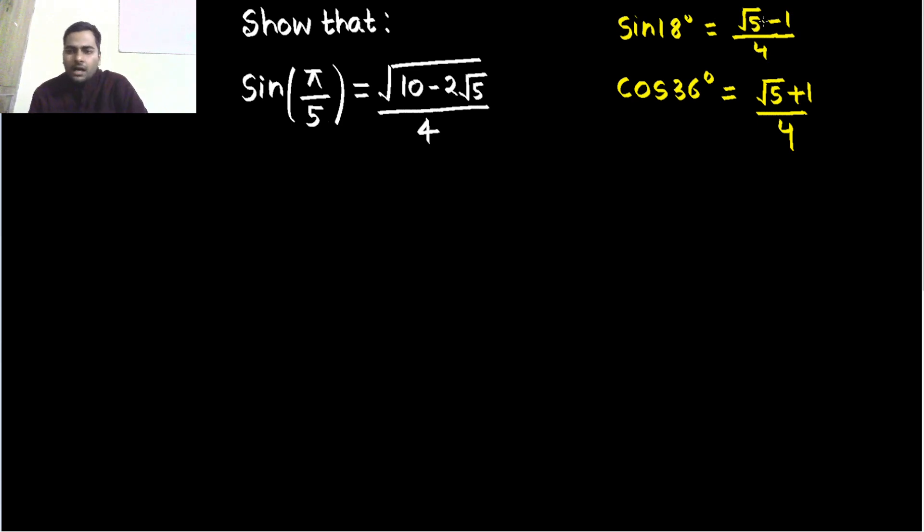I am writing here. So sin 18 value we know, then cos 36 value we know. Now π/5 is nothing but twice of π/10, π/10 is 18 degrees. So π/5, 36, is twice of 18 degrees.